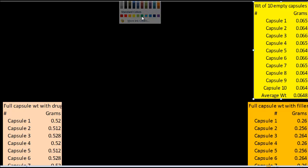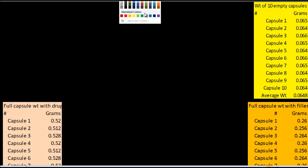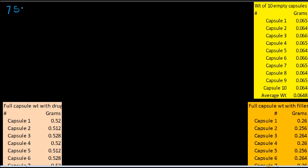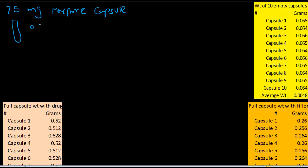Welcome back. Today we are going to discuss capsules and packing statistics. We are preparing 75 mg of morphine capsules, and the capsule size we are going to use today is a size zero capsule.